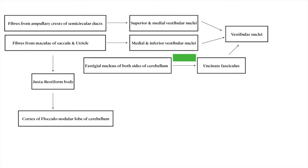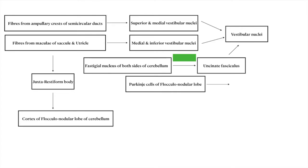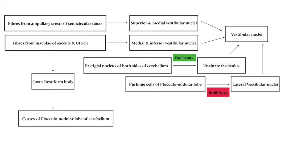The vestibular nuclei of both sides are connected via the uncinate fasciculus to the vestibular nuclei. There is another connection from the Purkinje cells of the flocculonodular lobe to the lateral vestibular nuclei. The connection from the vestibular nucleus to the vestibular nuclei is facilitatory, whereas the connection from the Purkinje cells to the lateral vestibular nuclei is inhibitory.